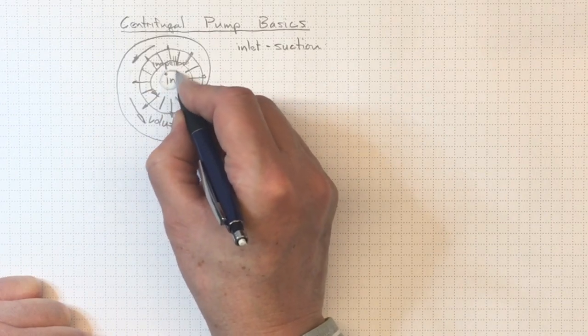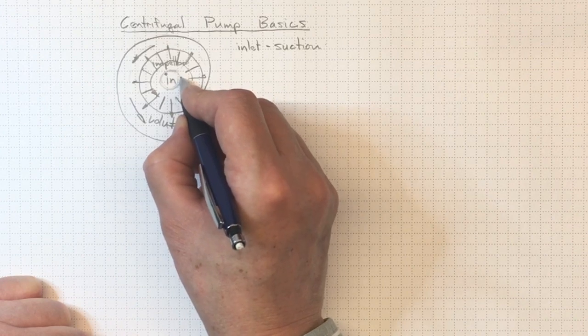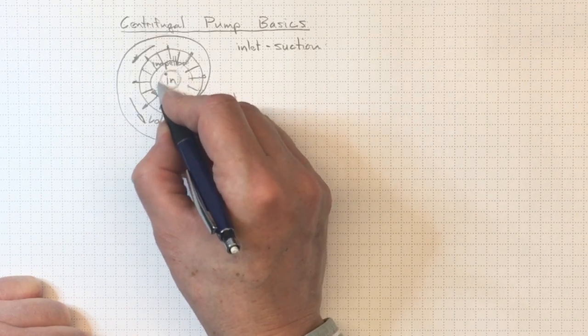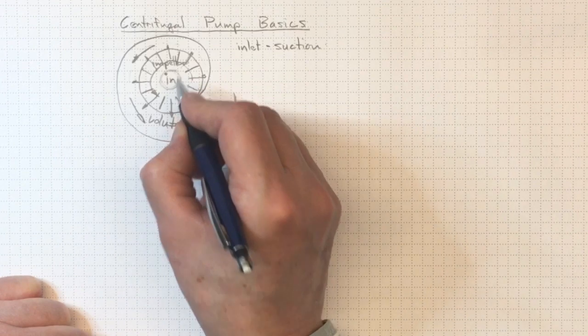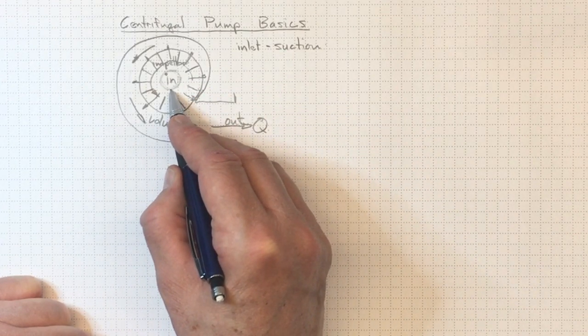And the pressure in the center here can actually be lower, below atmospheric pressure, and possibly even low enough that we could get some boiling in the liquid. And we'll talk about that later, where we have to be careful that we don't get that boiling or cavitation.